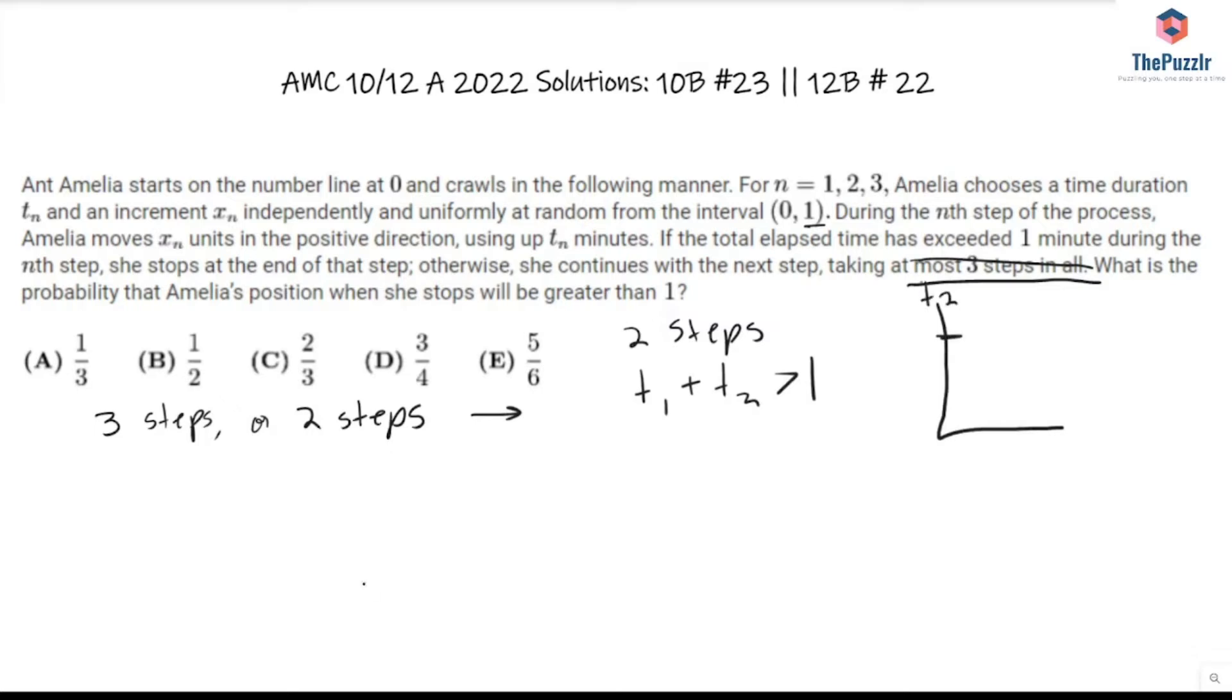You can plot t2 on the y-axis and t1 on the x-axis. In fact, a lot of the variables in this problem come down to some sort of geometric probability. So if we were to plot the line t1 equals t2, and then the part that we want is this right here. This is the part where t1 plus t2 is going to be greater than one. That's one-half. So the probability of this happening is one-half.